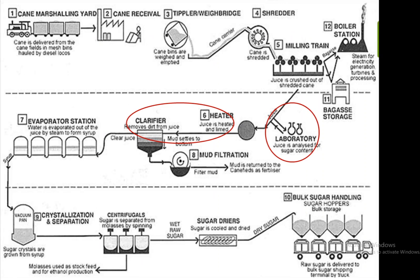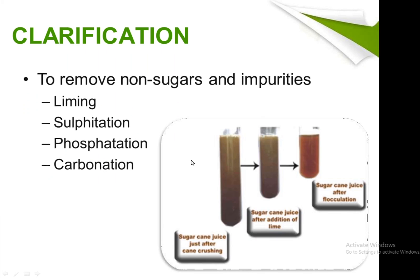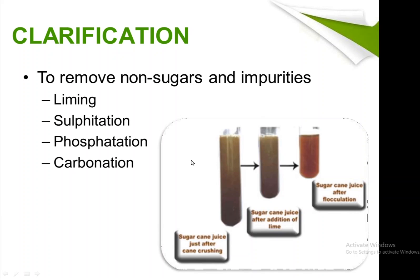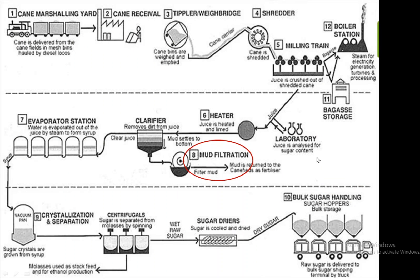The next step in the manufacturing process is clarification, where non-sugars and impurities are removed from the juice obtained from the mills. The process is carried out by liming, sulfitation, phosphation, and carbonation. First we have raw sugarcane juice after crushing, then after addition of lime, then after flocculation, and finally the clarified juice is sent for mud filtration.